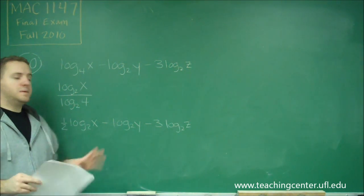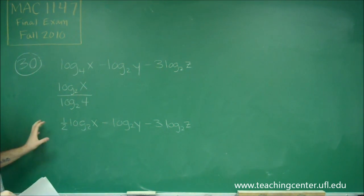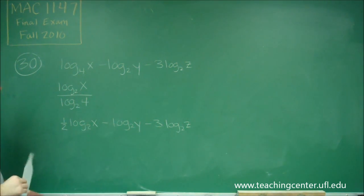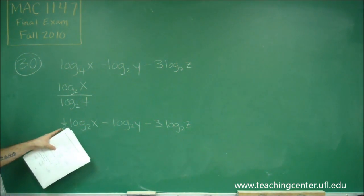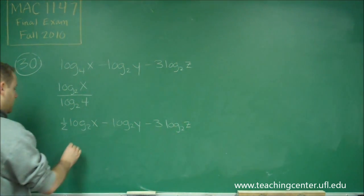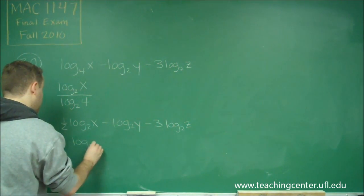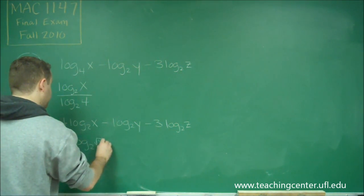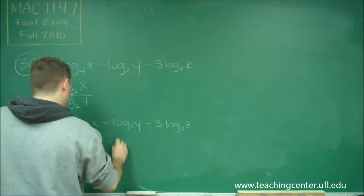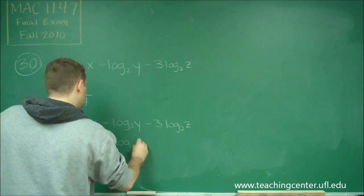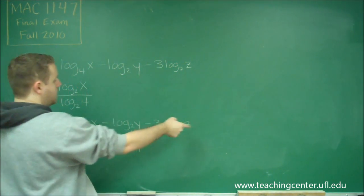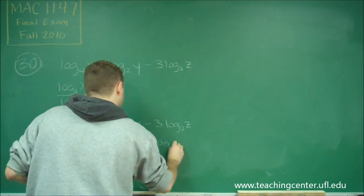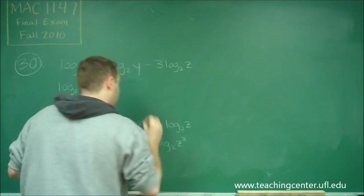Before we can start combining, we need to get rid of all the coefficients by turning them into powers of the argument. The one half becomes an exponent on x, giving us log base 2 of x to the one half — which is the square root of x. The 3 becomes a third power on z, giving us log base 2 of z cubed.